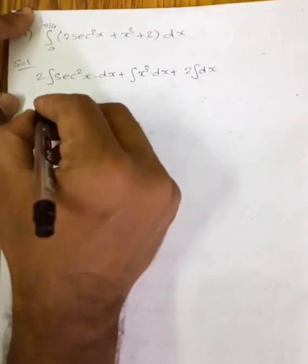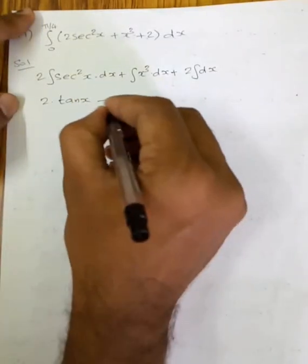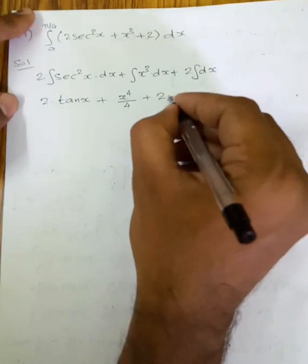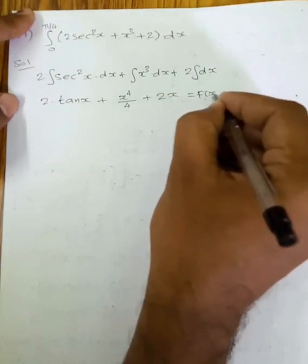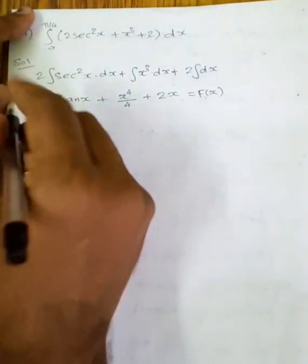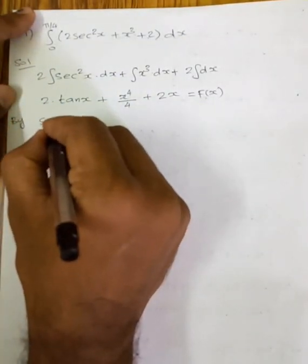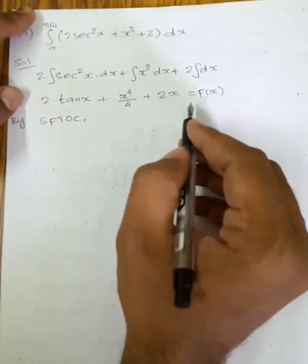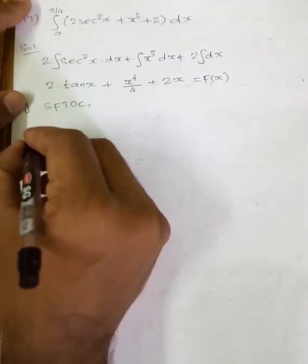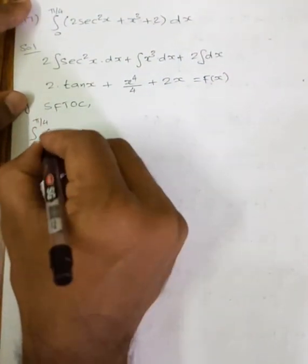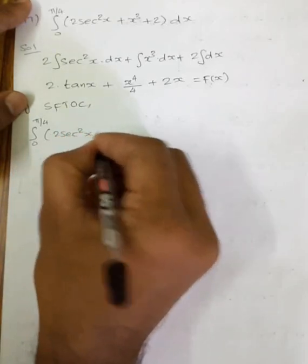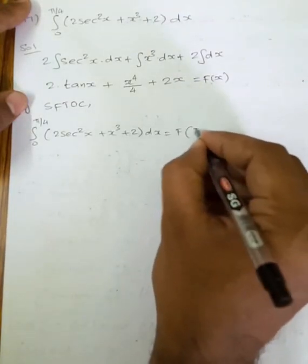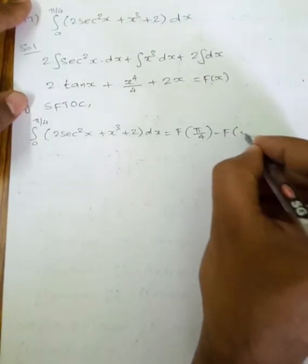Integration of sec²x is tan x. Integration of x³ is x⁴/4. Integration of 1 dx is x. So F(x) = 2 tan x + x⁴/4 + 2x. We apply the second fundamental theorem of calculus: F(upper limit) minus F(lower limit), i.e., F(5π/4) − F(0).